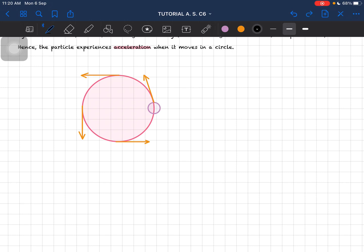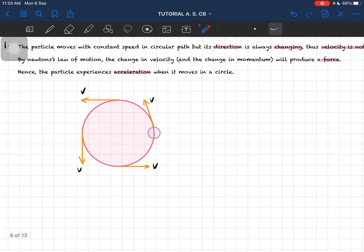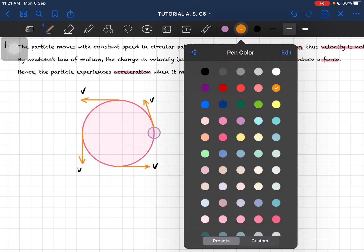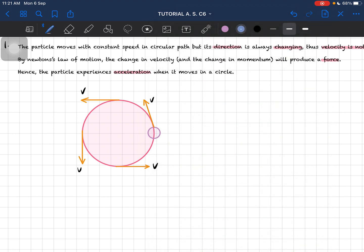When there's a change in momentum, there will be a presence of force. This force is the one that causes this particle to move in a circular path. The direction of the acceleration is the centripetal acceleration, which is going towards the center of the circle. This is our centripetal acceleration.